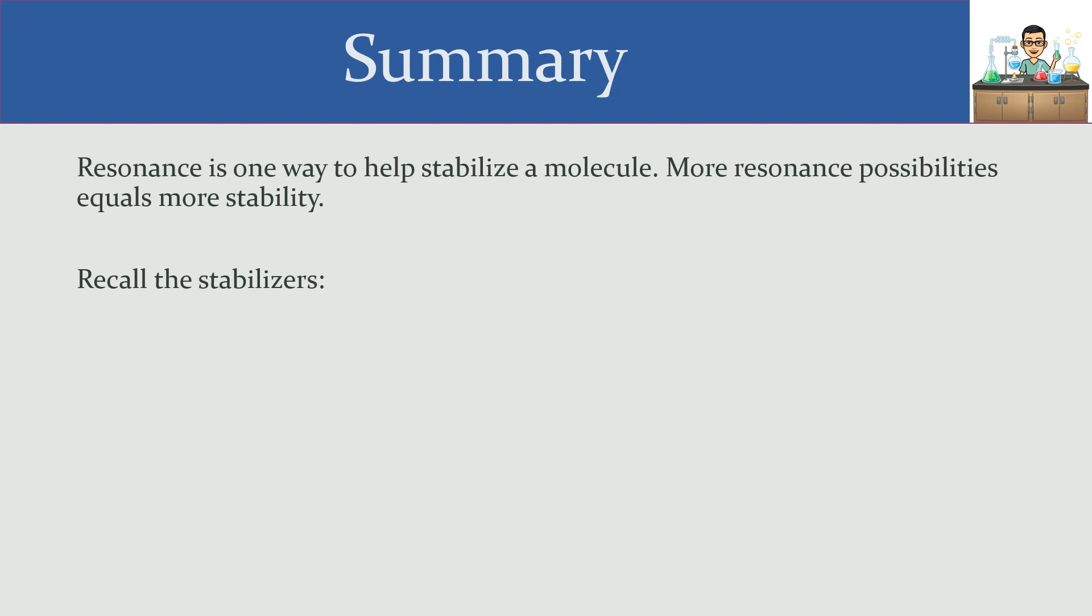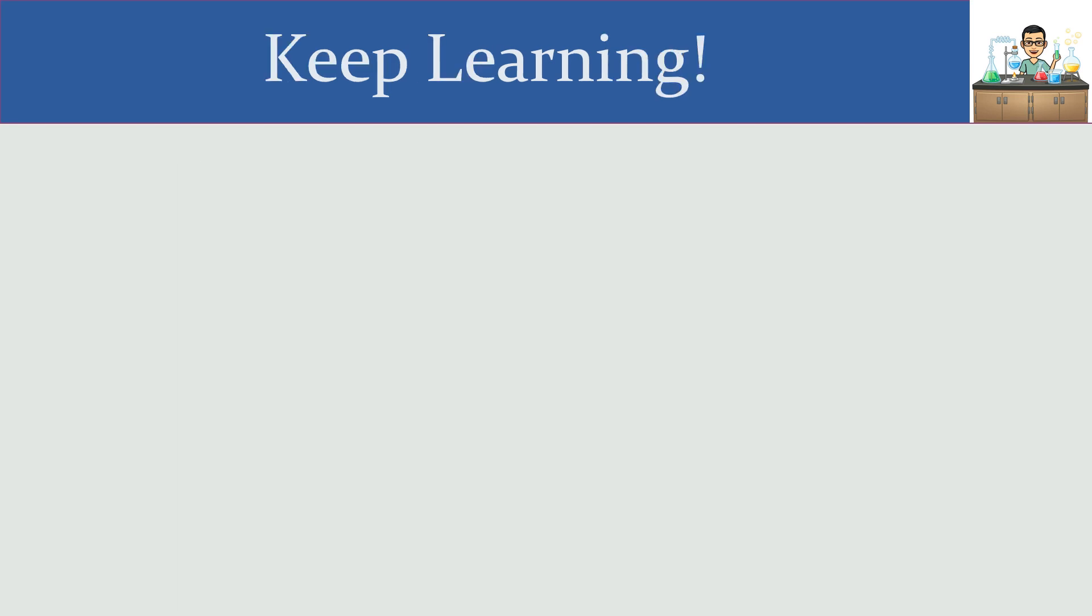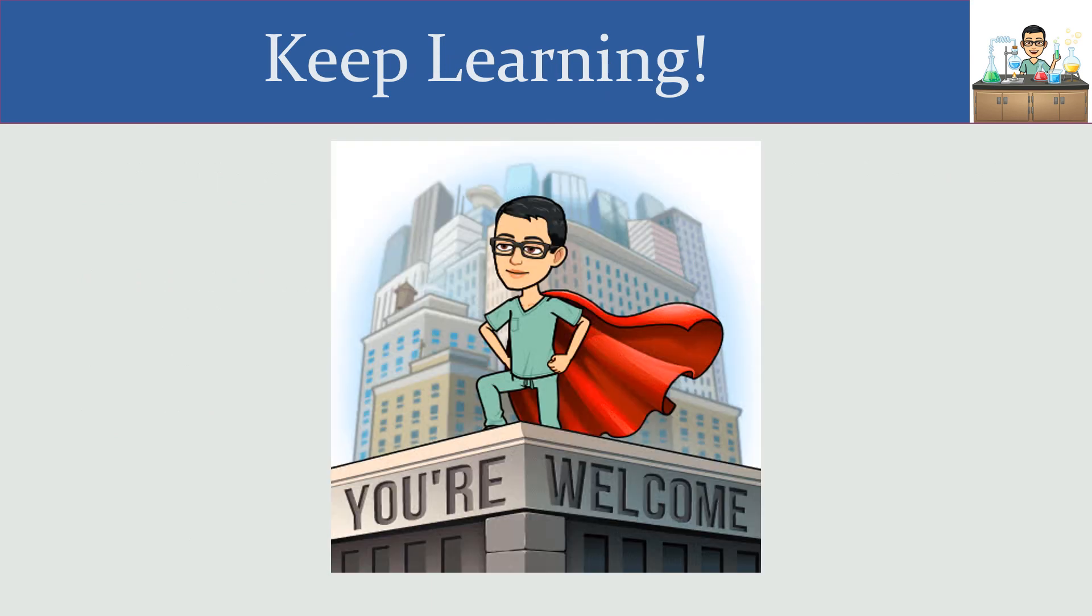Remember what the big stabilizers are. The mnemonic that you should remember is RAISE. R is resonance, A is aromaticity, I is induction, and S is electronegativity. Keep learning onward and upward. And as always, you're welcome.